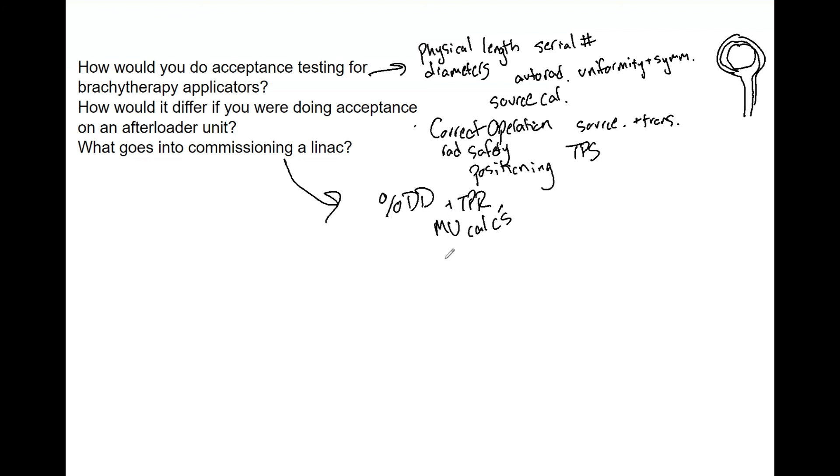different MLC transmissions - interleaf, leaf end - but you need to do all those, DLG, all that good stuff. You then need to look at your penumbra and then, of course, your TPS agreement. Quick acceptance testing, mainly for